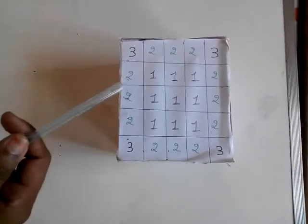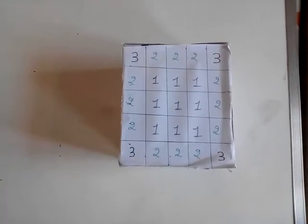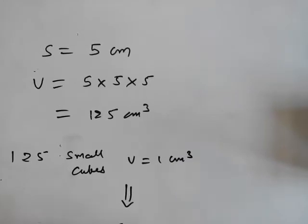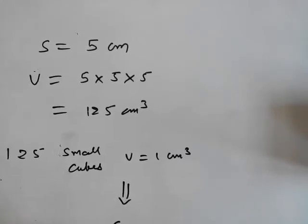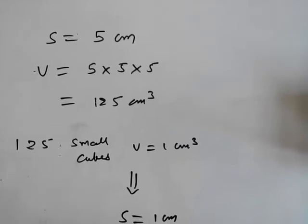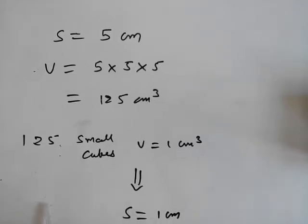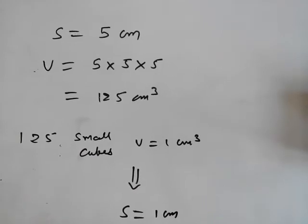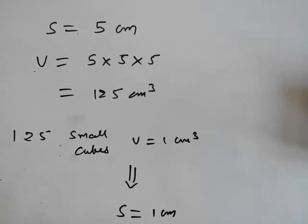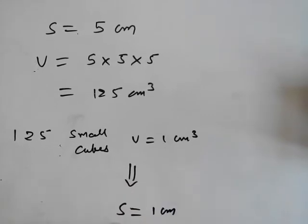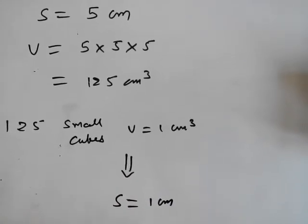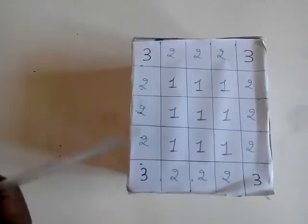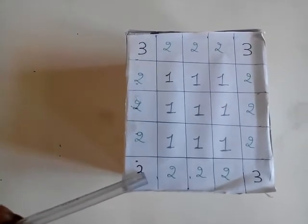Suppose this is my cube with side length 5 cm. So the volume of this cube will be 125 cm³. Now I want to split this cube into smaller cubes, with each smaller cube having volume 1 cm³. So I can split it into 125 smaller cubes, each having volume of 1 cm³. The total volume still remains the same. When the volume of the smaller cube is 1 cm³, that implies the side of the smaller cube is 1 cm. In this cube, the edge of the bigger cube is comprised of 5 smaller cubes, each having side 1 cm.